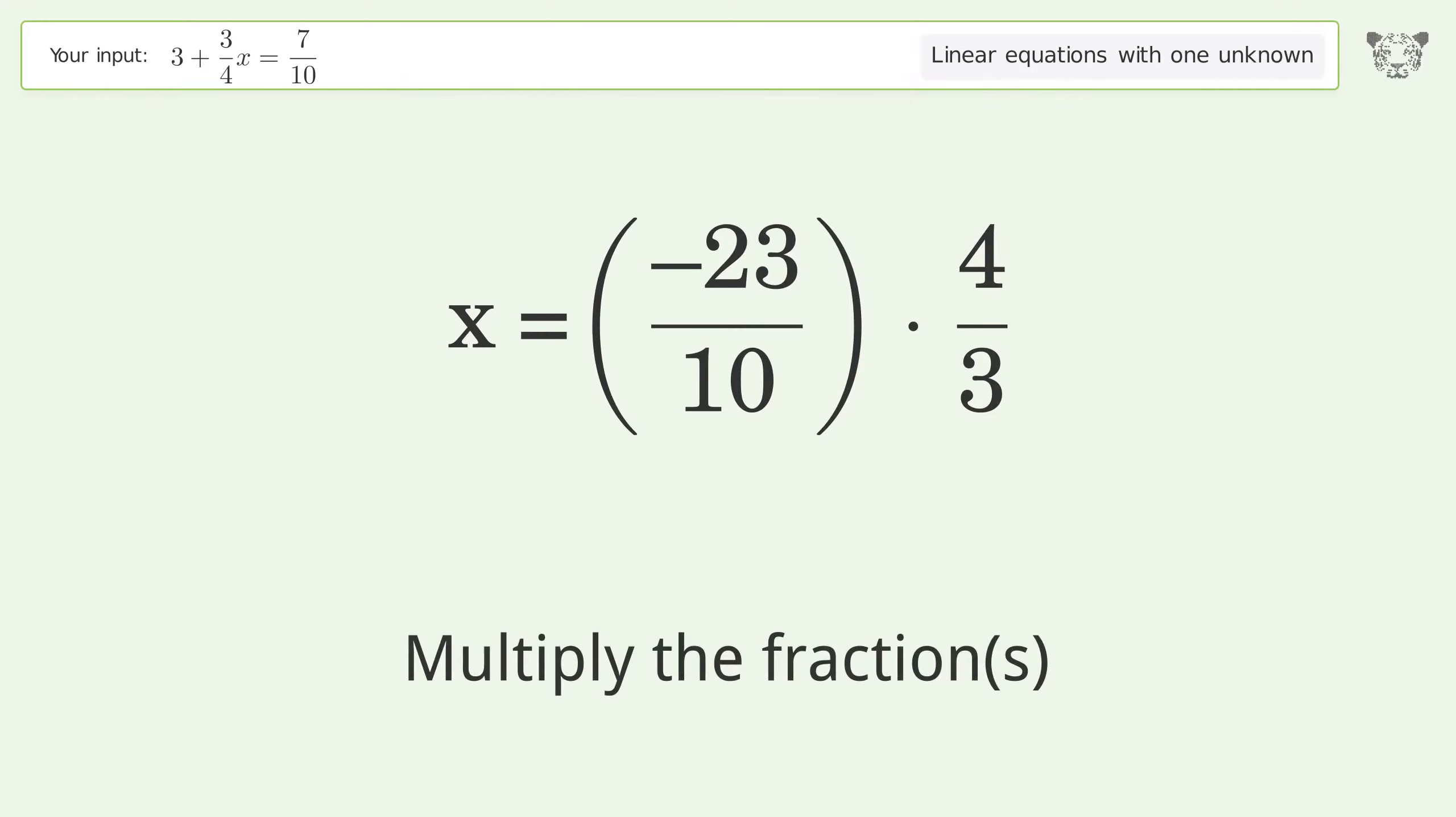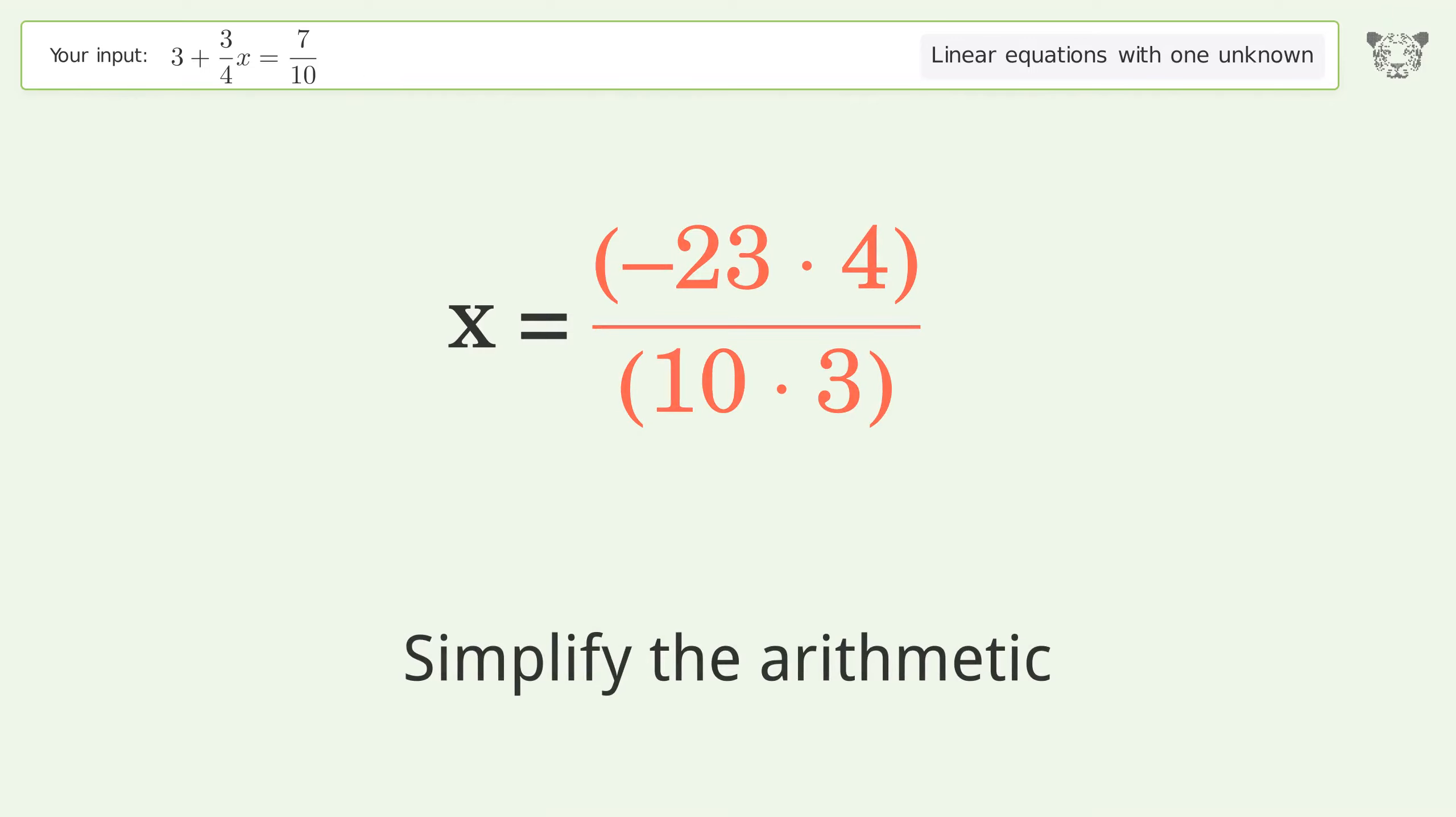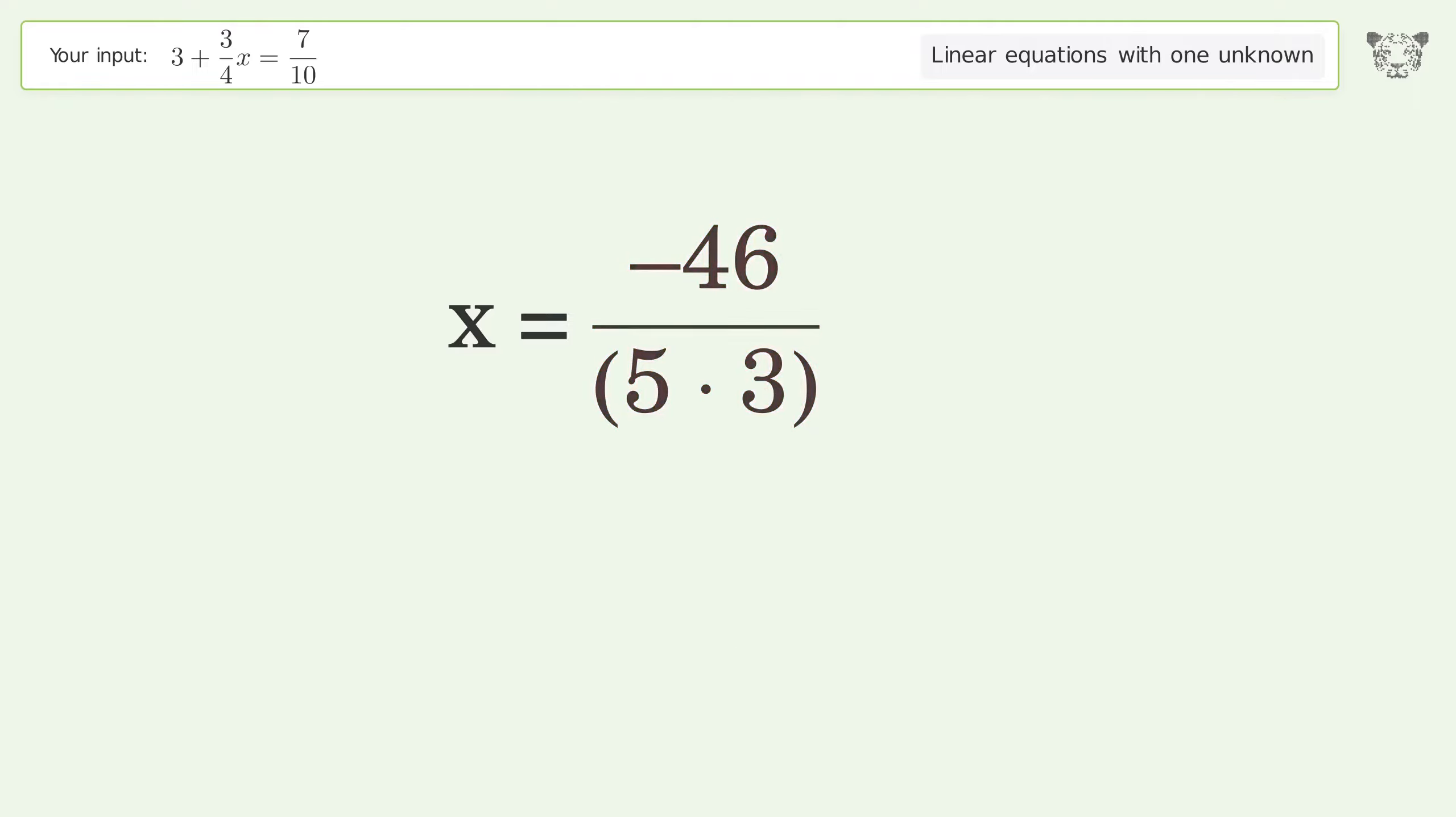Multiply the fractions. Simplify the arithmetic. And so the final result is x equals negative 46 over 15.